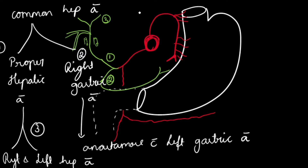To summarize: the common hepatic artery first gives the gastroduodenal artery, which divides into the superior pancreaticoduodenal artery and right gastro-epiploic artery. It then divides into the proper hepatic artery and right gastric artery. The right gastric artery runs along the lesser curvature and anastomoses with the left gastric artery. The proper hepatic artery runs with the bile duct and portal vein, enters the porta hepatis as right and left hepatic arteries, and gives branches to the gallbladder as the cystic artery.